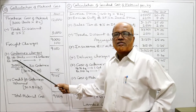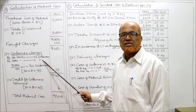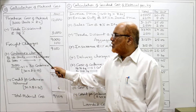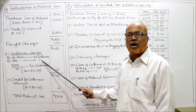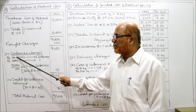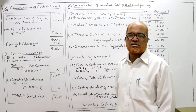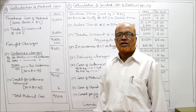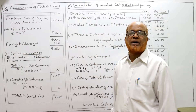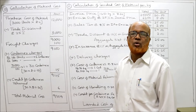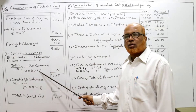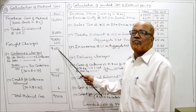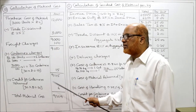For 100 units one container is required, but we are purchasing 3000 units. So 3000 ÷ 100 = 30 containers required. Each container costs 50 paisa, so 30 × 0.50 = 15 rupees container charges. Adding to 9,100 gives 9,115.